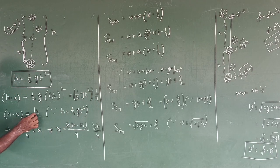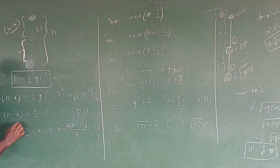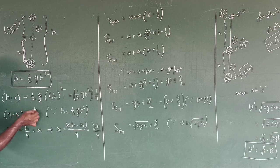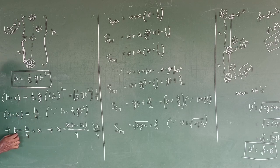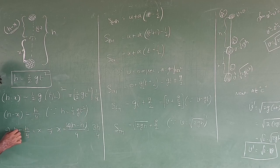Then h minus x is equal to h by 4. So x is equal to h minus h by 4. Taking LCM: 4h minus h gives 3h by 4. That is the value of x — x is equal to 3h by 4.